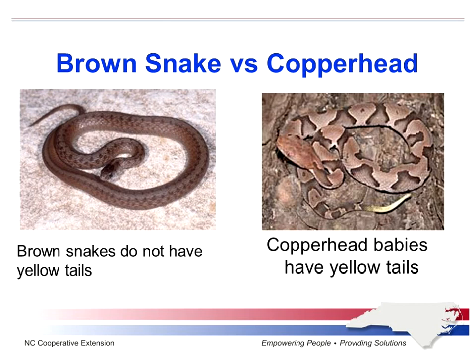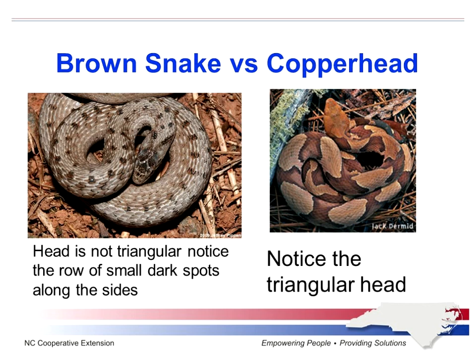Other things that you don't have to get too close to: copperhead babies have this yellow tail, so you don't have to get close to the snake to see whether or not it's got a yellow tail. It's usually pretty visible. If they're all curled up, you can notice that the copperhead has a very definite triangular head, whereas the brown snake doesn't have as defined a triangle. The coloration of the snakes is also very different.